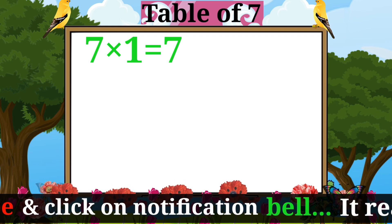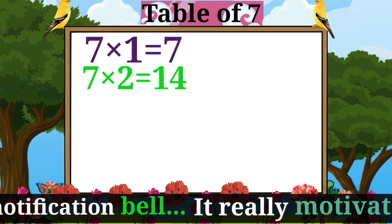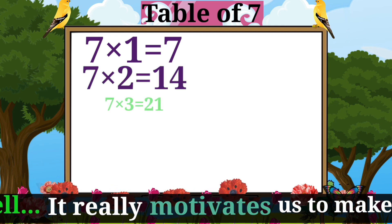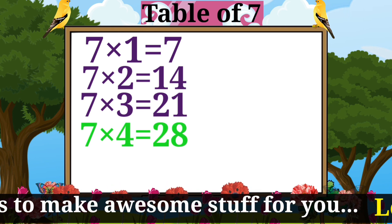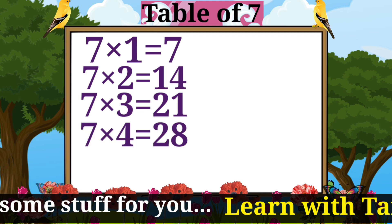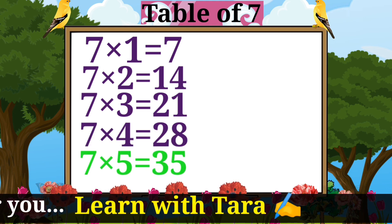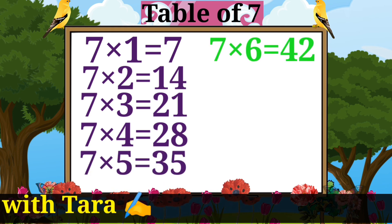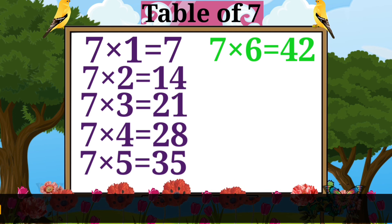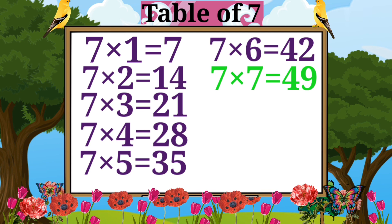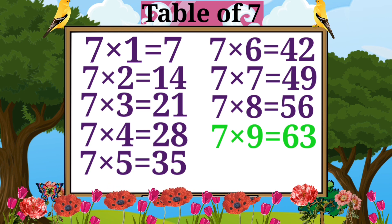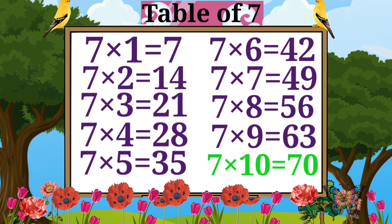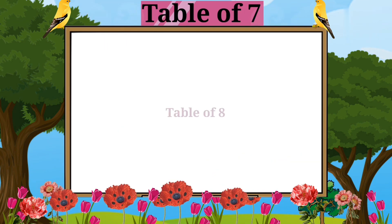Seven ones are seven. Seven twos are fourteen. Seven threes are twenty-one. Seven fours are twenty-eight. Seven fives are thirty-five. Seven sixes are forty-two. Seven sevens are forty-nine. Seven eights are fifty-six. Seven nines are sixty-three. Seven tens are seventy.